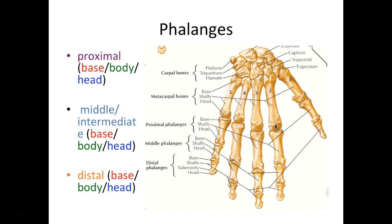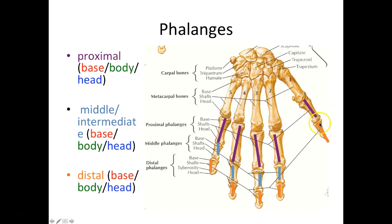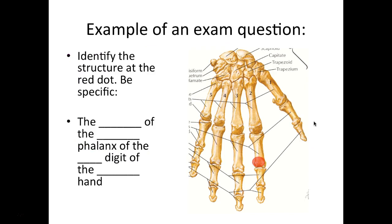Beyond the metacarpals we have our phalanges. We have three different types. Focusing on one finger: the proximal phalange, the middle or intermediate phalange, and the distal phalange. Each has a base, body, and head. Notice that digit number one — the thumb — does not have a middle phalange. So we have a base of a proximal phalange, a body of a proximal phalange, and a head of a proximal phalange.